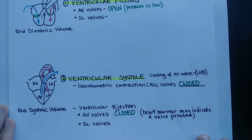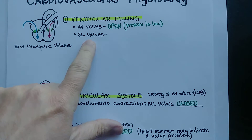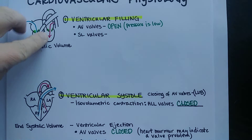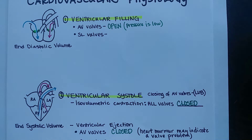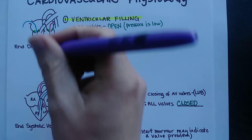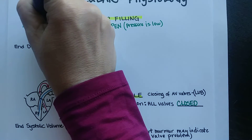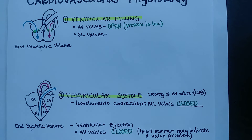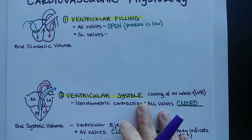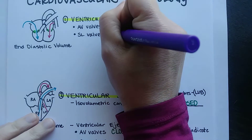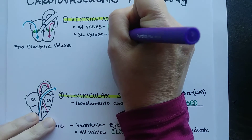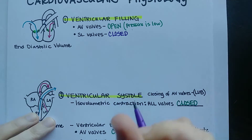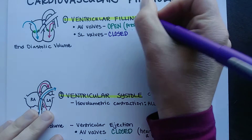Going back to ventricular filling, let's look at what the semilunar valves are doing — shown in purple. They are both closed at this point, because semilunar valves can only open under high pressure. Under low pressure, they remain closed. They are closed during ventricular filling because pressure is low.